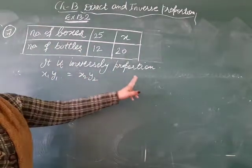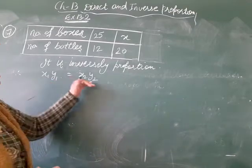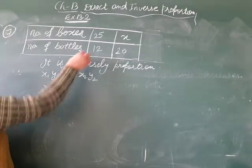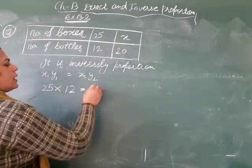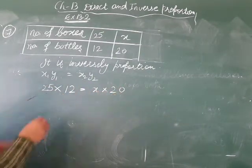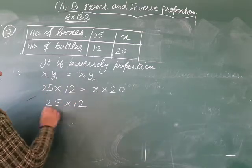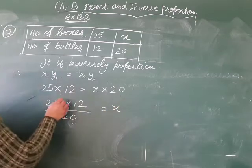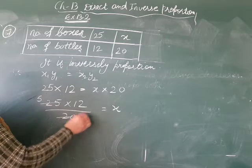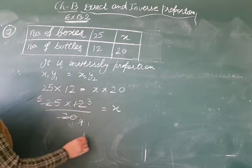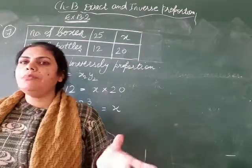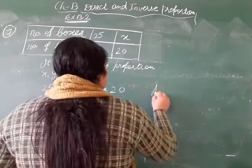So this is inversely proportional. Inversely proportion: x1 × y1 = x2 × y2. x1 = 25, y1 = 12, x2 = x, y2 = 20. So 25 × 12 = x × 20. Divide: x = (25 × 12) / 20. 5 × 3 = 15. So if 20 bottles were packed in one box, how many boxes are ready? 15 boxes.